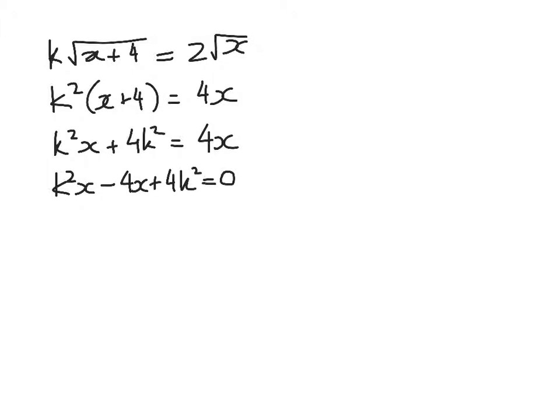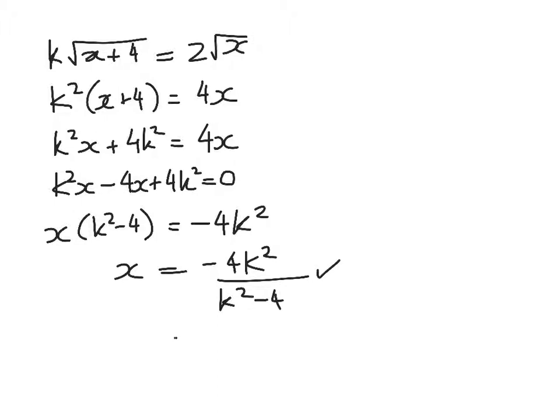Now it looks like a quadratic but don't make that mistake, it's not even that hard. That's just x(k²-4) = -4k². So x = -4k²/(k²-4).